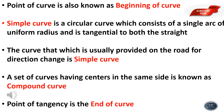Point of curve is also known as beginning of curve. A simple curve is a circular curve which consists of a single arc of uniform radius and is tangential to both the straights. The curve usually provided on a road for direction changes is a simple curve.